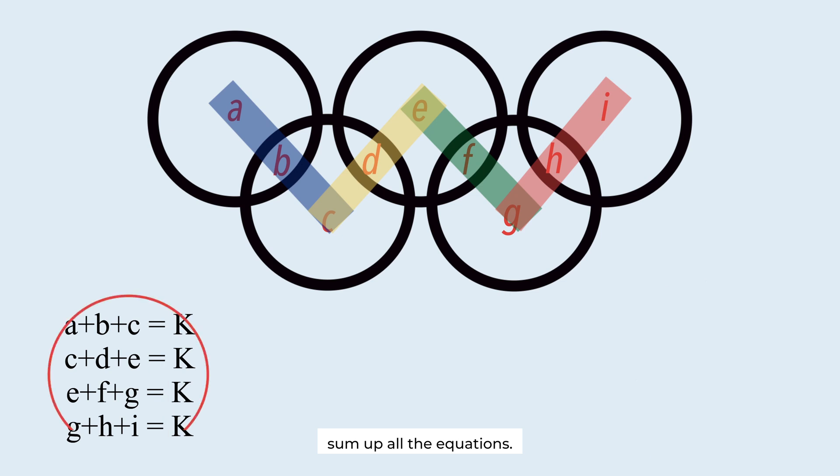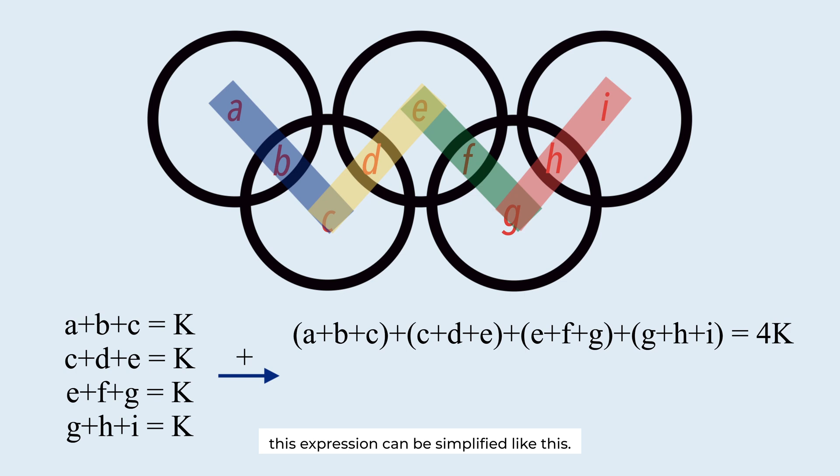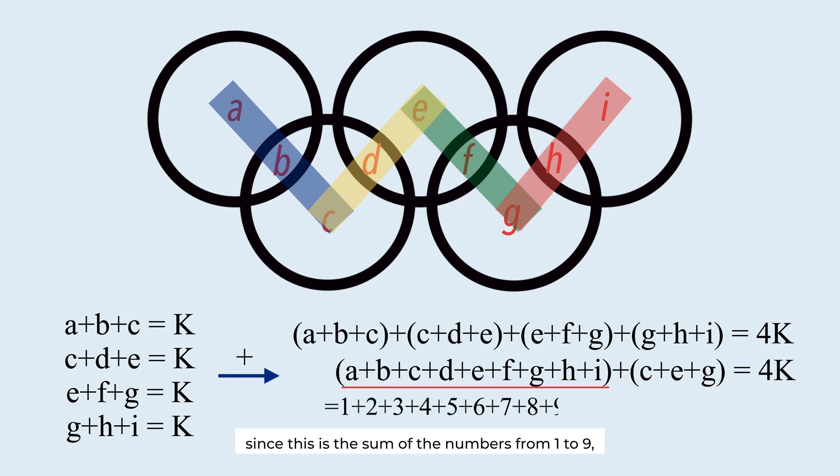Sum up all the equations. This expression can be simplified like this. C, E, and G are counted twice. Since this is the sum of the numbers from 1 to 9, we can derive this equation.